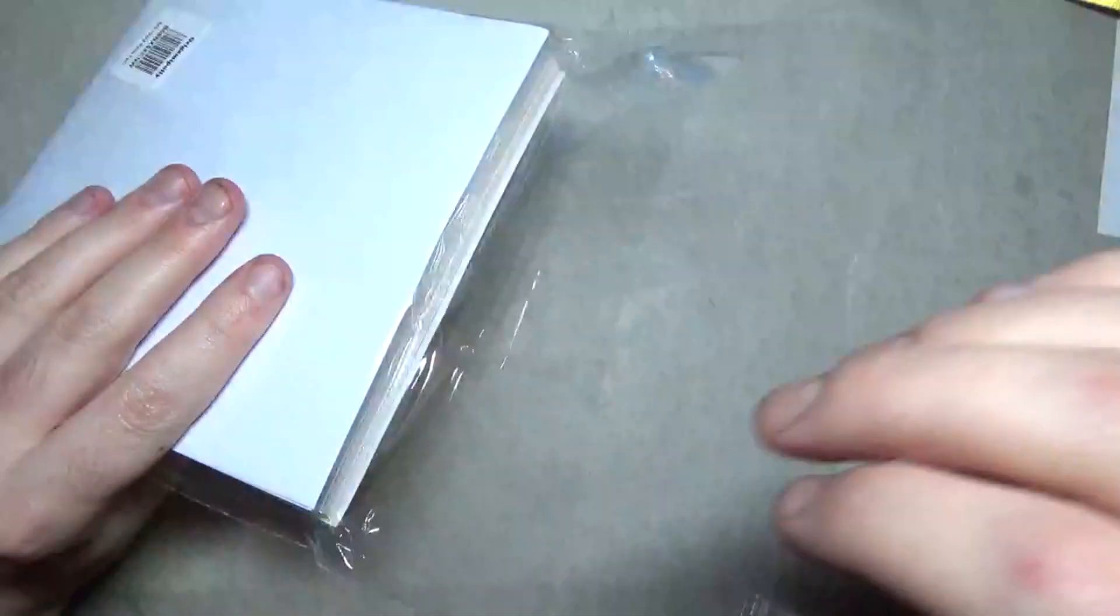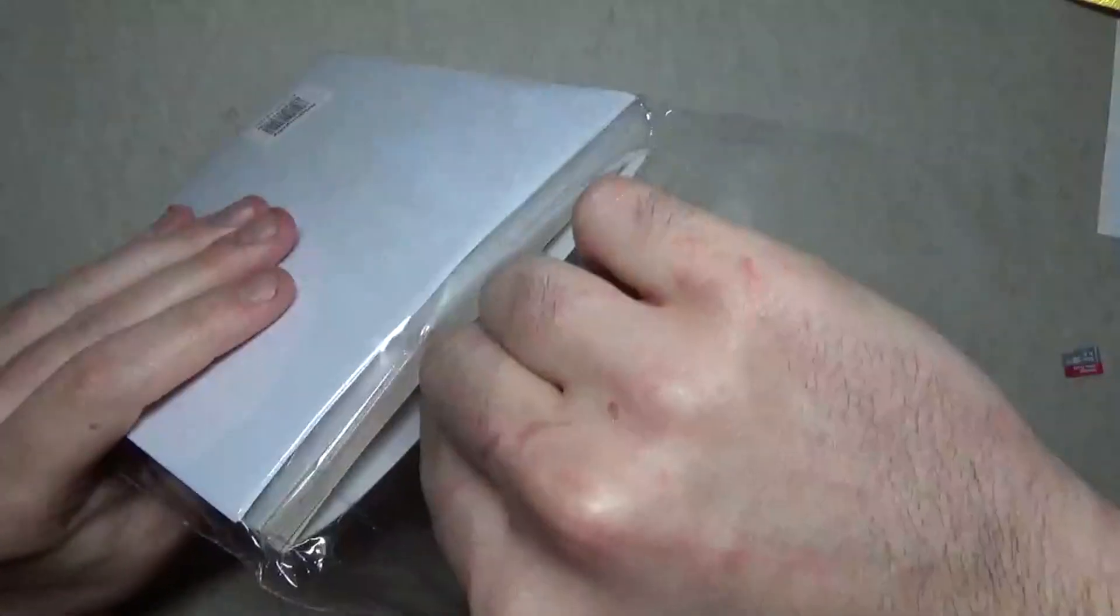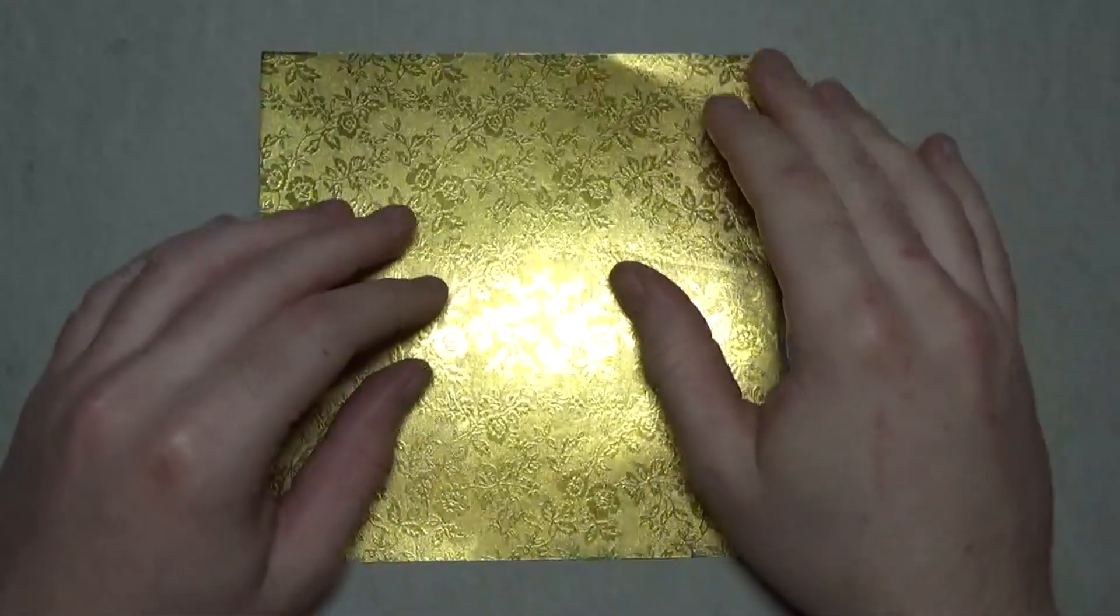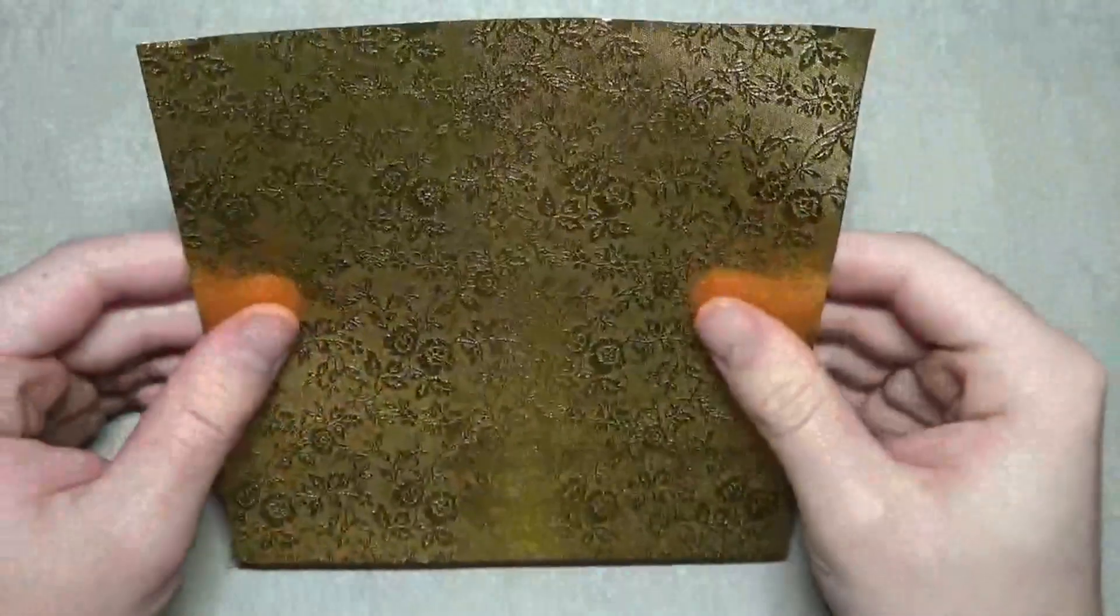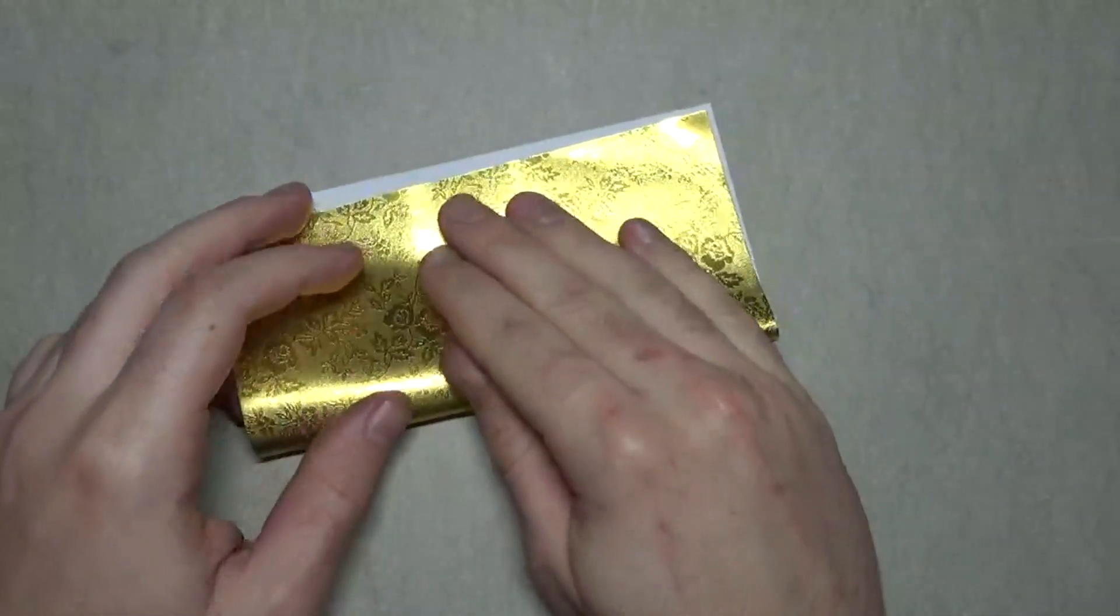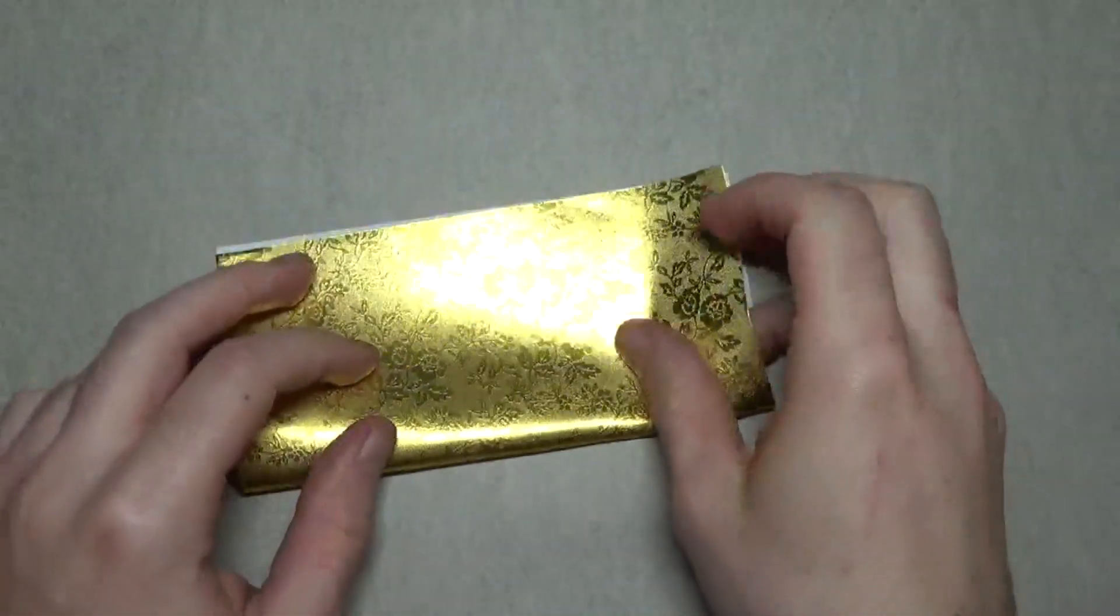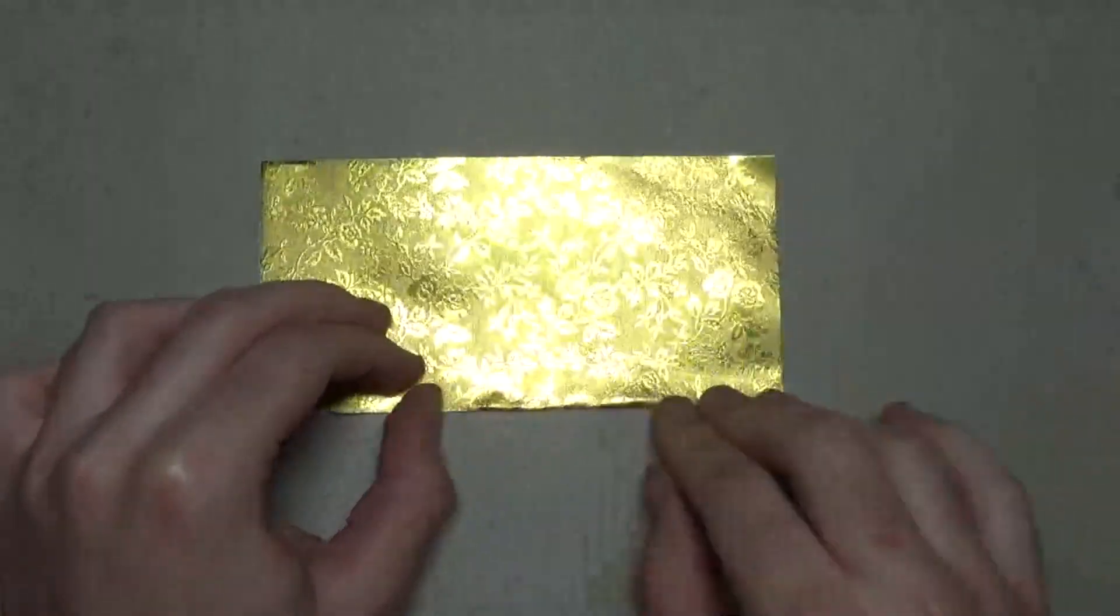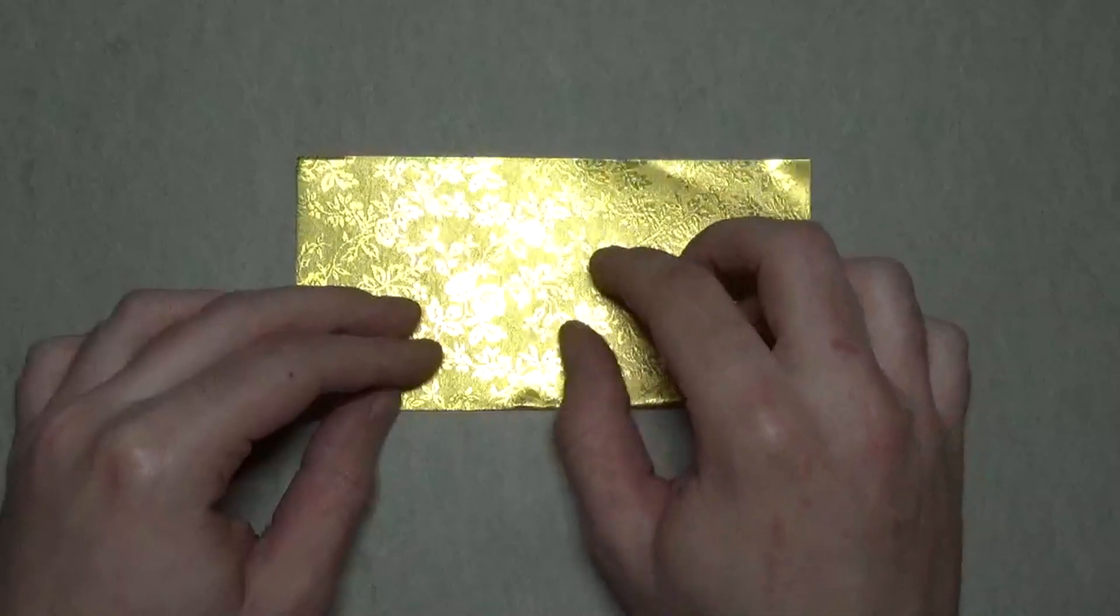Let me just get a sheet out here. I'm going to make a star box. I'm going to begin white side up and fold in half. If you actually know how to make the star box you can just enjoy this tutorial, but if you don't know how to make the star box then I'll show you how to make it right now.